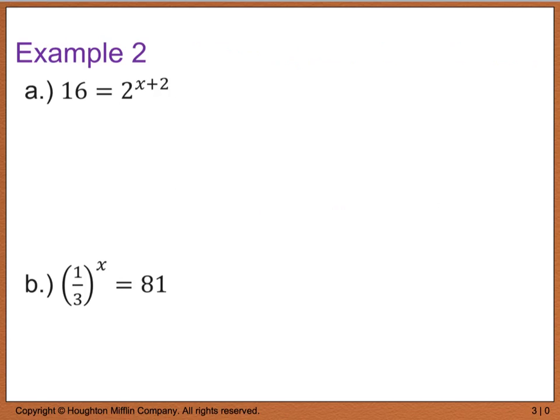So with that, let's look at example two. It says a, or for part a, we have 16 equals 2 to the x plus 2. Well, I can't solve for x because I don't have the same base, and therefore I can't set my exponents equal to one another. But I can rewrite 16 as a power with base 2 and an exponent of 4, and now I have 2 to the x plus 2 on this side. Well, because my bases are the same, now all I have to do is equate my exponents. So I really have 4 is equal to x plus 2, which tells me that x is equal to a positive 2.